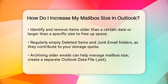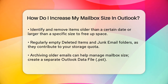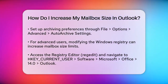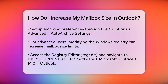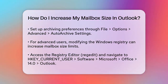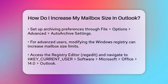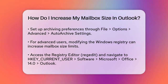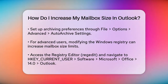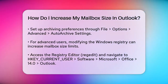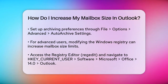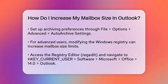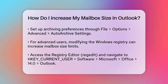Modifying the Registry: If you need more space and can't archive enough, you can increase the mailbox size limit by modifying the Windows Registry. This is a bit more technical, so be careful. Log in with an administrator account, open the Registry Editor (Regedit), and navigate to HKEY_CURRENT_USER > Software > Microsoft > Office > 14.0 > Outlook. Here, you might need to create a new key called PST if it doesn't exist. Then create DWORD values for Max File Size, Warn File Size, Max Large File Size, and Warn Large File Size. Set these values in bytes — for example, to double the default 1.933 GB limit, you would set Max File Size to 4,150,298,624 bytes.